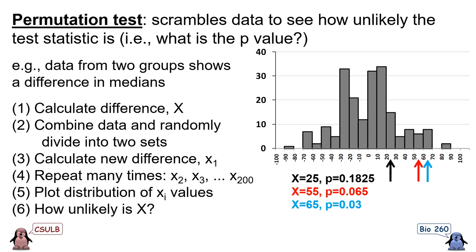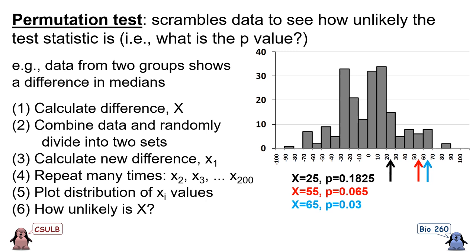The permutation test is a method that can be used to compare any statistic we are interested in, such as a median, mode, or variance — it is a very versatile technique. The way it works is by scrambling the data to see how unlikely the test statistic is, in other words, to directly calculate a p-value. For example, imagine we have data from two groups that show a difference in their medians, and we want to know whether this is a significant difference or the sort of difference that sampling error could easily cause.